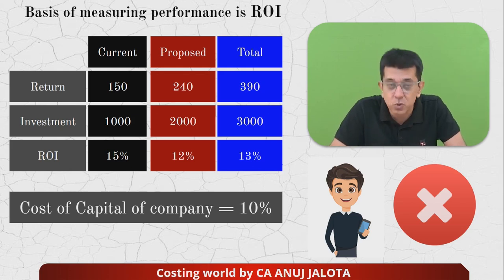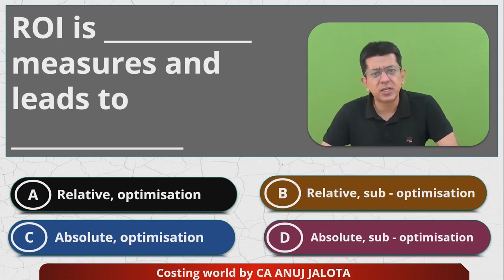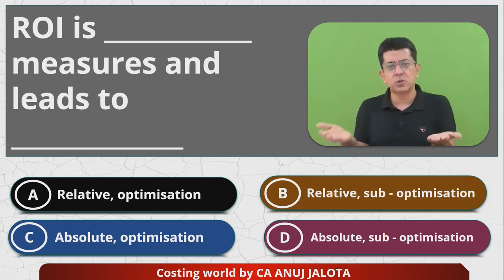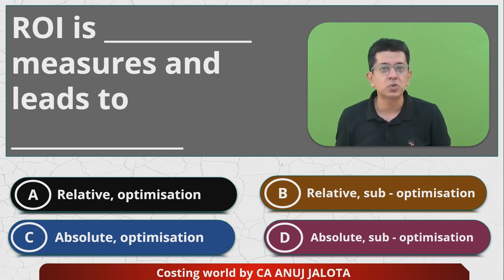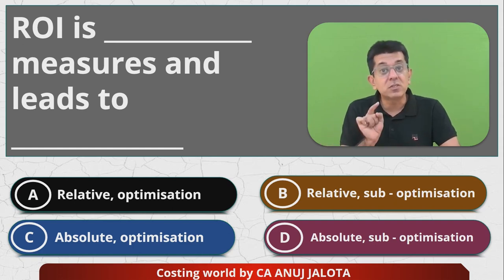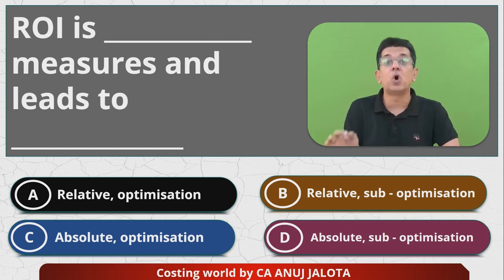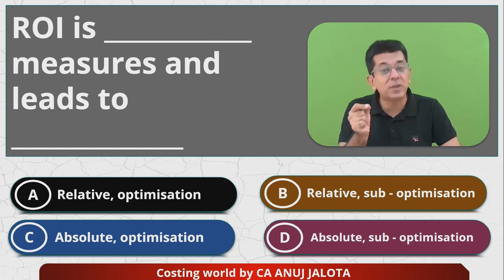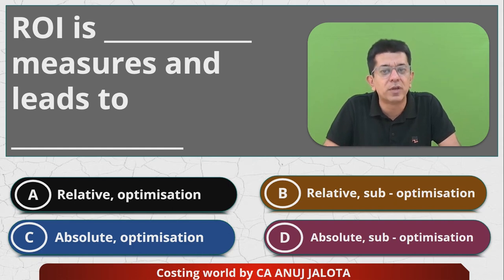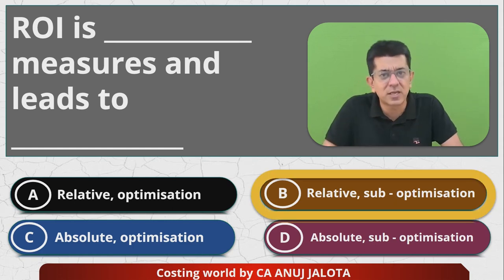Coming back to the question: ROI is a percentage measure — it is basically used when comparing two divisions of different sizes, because we bring them to the same base of 100. But as we saw in the example, Mr. A would reject a proposal that is good for the company but bad for his own evaluation. This leads to sub-optimization — the company will not be able to optimize its assets properly because it rejects a worthwhile proposal. So the answer is option B: relative and sub-optimization. See you next time with another MCQ — bye, take care.